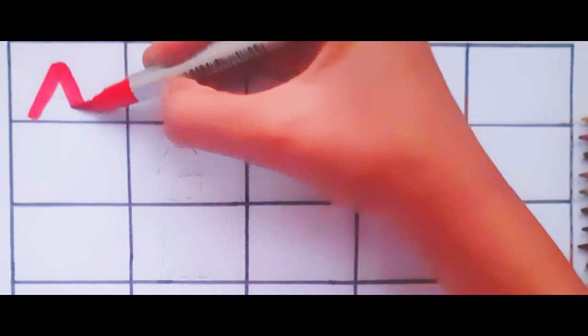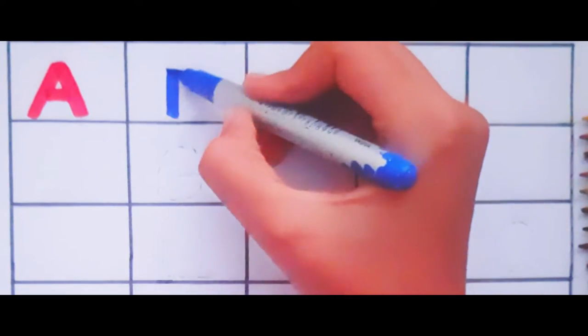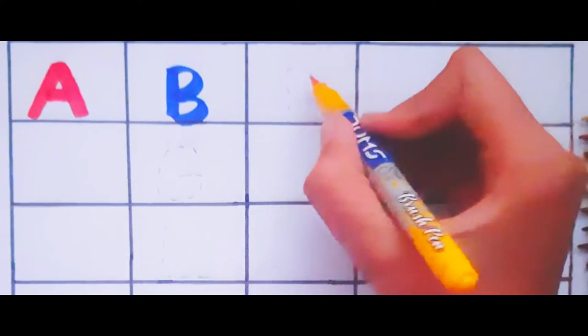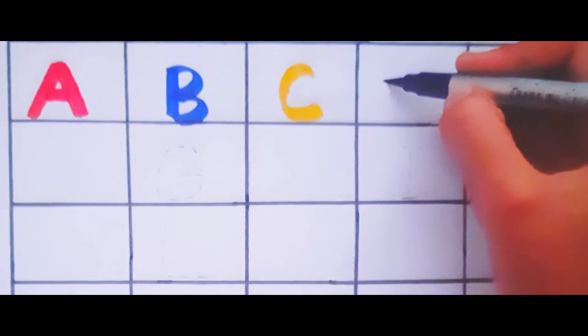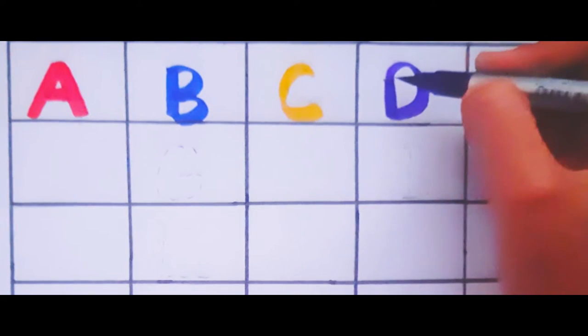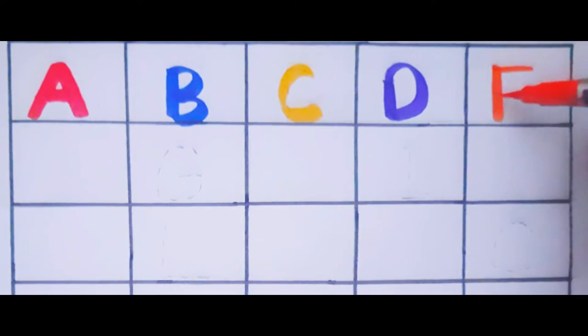A. A for apple. B. B for ball. C. C for cat. D. D for dog. E. E for elephant.